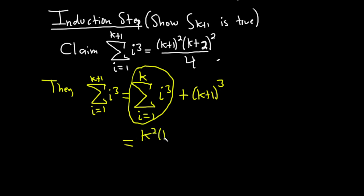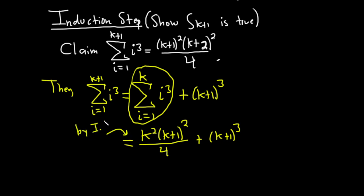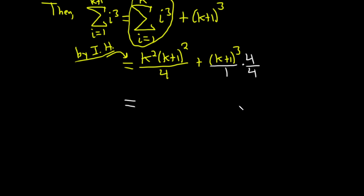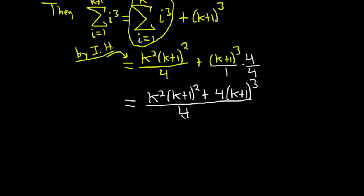By the induction hypothesis, the sum from 1 to k of i cubed equals k squared times k plus 1 squared over 4, plus k plus 1 cubed. It helps to specify when you use the induction hypothesis for added clarity — you want to be as clear as possible in proof writing. Now we need to add these: multiply k plus 1 cubed by 4 over 4 to get a common denominator. So this becomes k squared times k plus 1 squared plus 4 times k plus 1 cubed, all divided by 4.